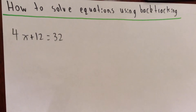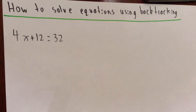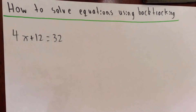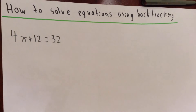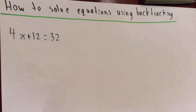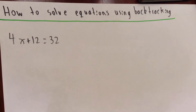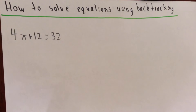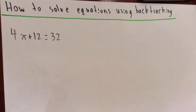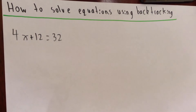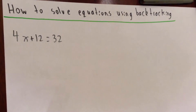Hello everyone. Today I'll be teaching you how to solve equations using backtracking. To solve equations, it is possible to travel in either direction for a flow chart. Working backwards against the arrow is called backtracking. Backtracking in an algebraic expression can be used to find the input number.